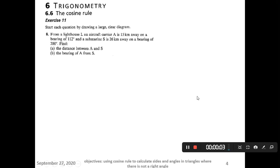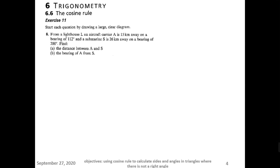Welcome once again to solving word problems that involve sketching a diagram, finding the triangle, applying the cosine rule to find missing sides or missing angles, and then calculating the bearing. We always start by reading the question, and as we are reading the question, we sketch the diagram.